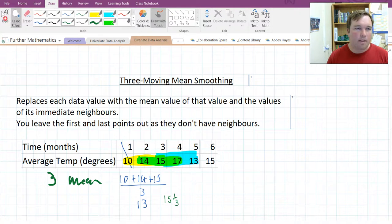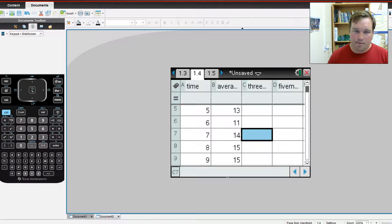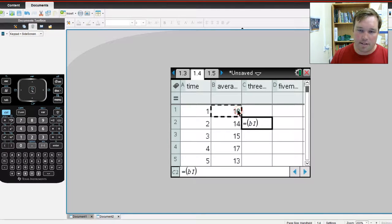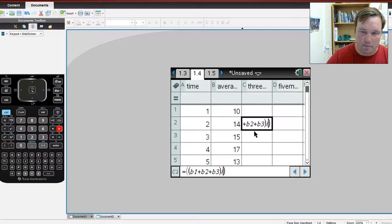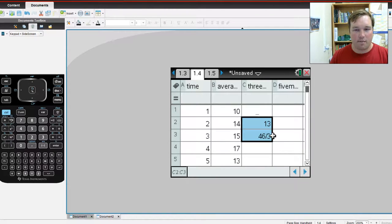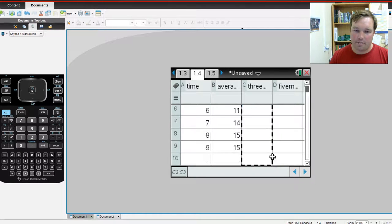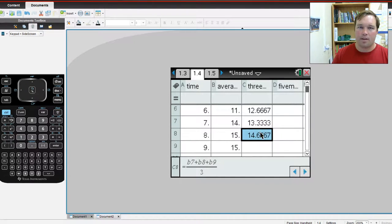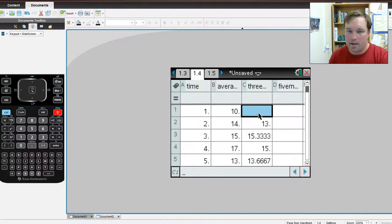Now what this means is perhaps more obvious on the CAS. So on the CAS, if we want to do time series data, we have time here, month, average temperature, and then three mean smoothing. Now here we don't have anything because it's got no neighbours, but this one is equal to the sum of this cell plus B2 plus B3, all divided by three. So this here gets us that 13, and then if we click and drag, or for you it's press and hold and drag, 46 on three, and so on down. And I just changed my mode to make sure that it was in decimals.